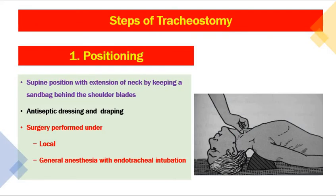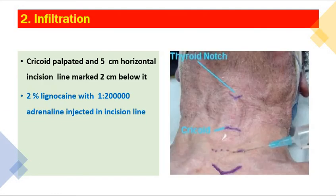Now let's come to the steps of tracheostomy. First, patient positioning: supine position with neck extension by placing a sandbag behind the shoulder blades to achieve adequate neck extension. Antiseptic cleaning and draping is performed. Surgery can be performed under local anesthesia when the patient has acute respiratory distress and cannot be intubated, under general anesthesia with intubation, or under sedation when the patient is already intubated.